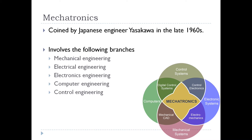Mechatronics involves the following branches of engineering: mechanical engineering, electrical engineering, electronics engineering, computer engineering, and control engineering. Mechanical systems include hydraulic, pneumatic, rotational, translational, thermal, etc. These systems are interfaced with computers through sensors, actuators, and electronic systems. Other mechanical components used are control valves, gears, cylinders, chains, etc.